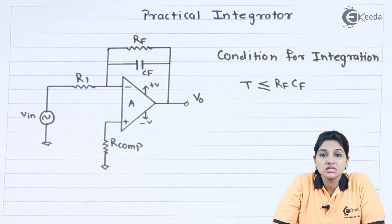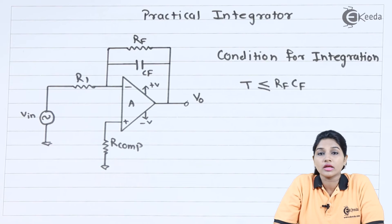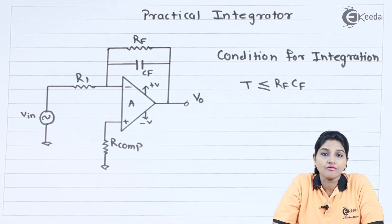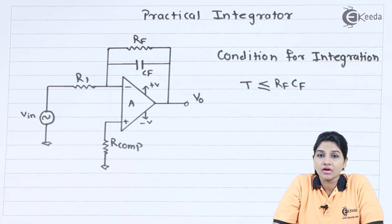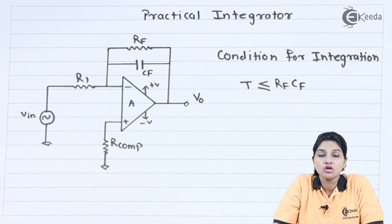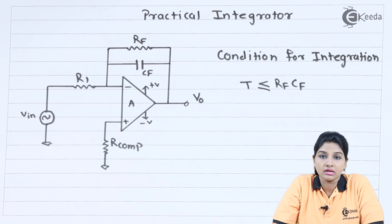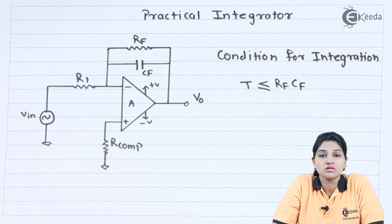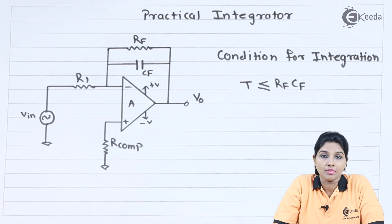Also, at DC signal the circuit cannot be used to amplify, and it cannot be used to provide output at high frequency signals. So these are some basic disadvantages of the basic or ideal integrator circuit. In order to overcome this, we need to move to a circuit called the practical integrator. In the practical integrator circuit, the resistor RF is included along with a capacitor in the feedback path.